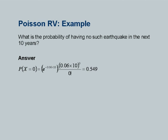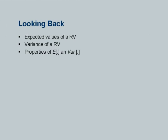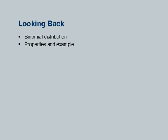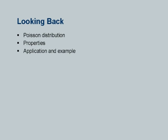That concludes today's lecture. Looking back at what we covered: expected values, variances, their properties, binomial distribution with properties and examples, and Poisson distribution with properties and application examples.